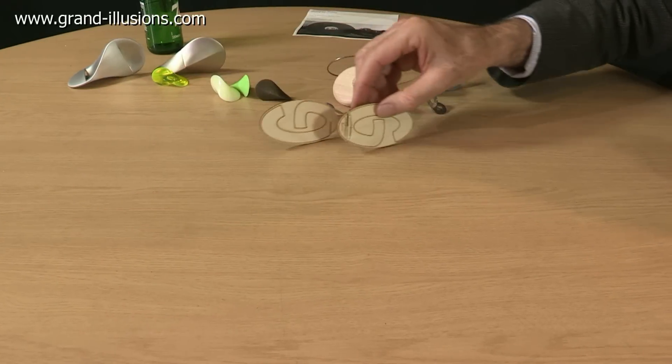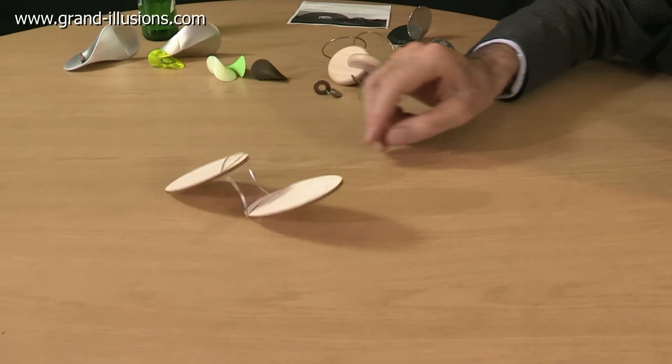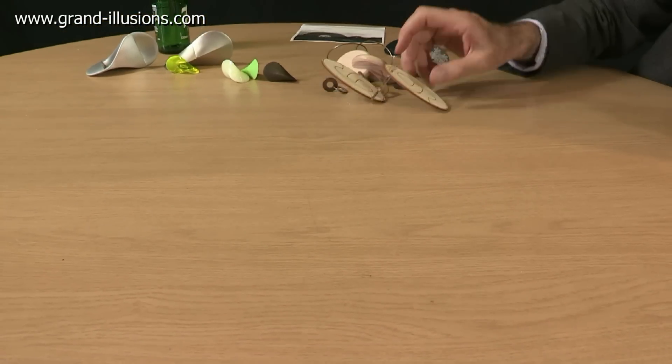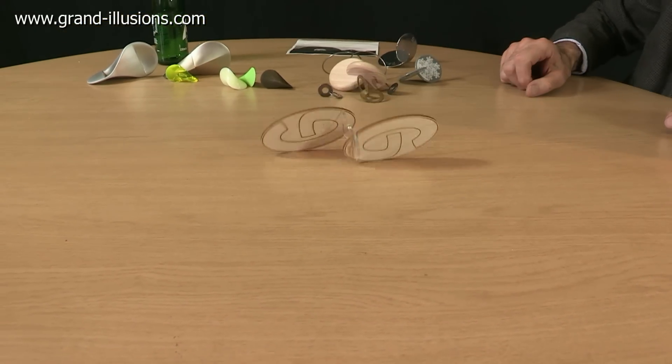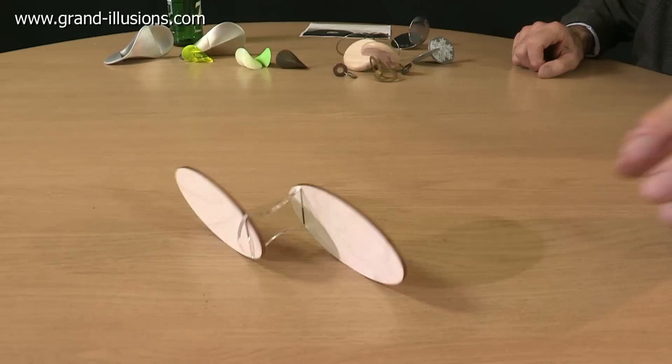But clearly the way it's rolling, it's showing that the center of gravity is staying the same height above the table all the time. But look at that, this was made for the Gathering for a Gardner about eight years ago, I think it was. Beautiful, slow motion one.